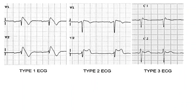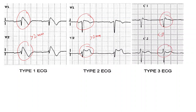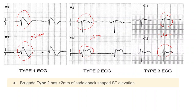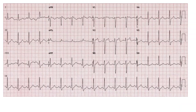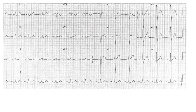Looking at the ECG, you can see coved ST segment elevation more than 2 mm in Type 1. Type 2 shows saddle back type ST segment elevation, also more than 2 mm. Type 3 can be coved or saddle back, but the elevation here is less than 2 mm. Looking at the ECG image, you can see saddle back type ST elevation — that is Type 2 — and another saddle back type elevation but less than 2 mm, so that is Type 3.